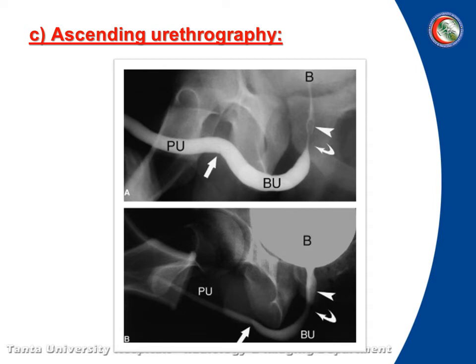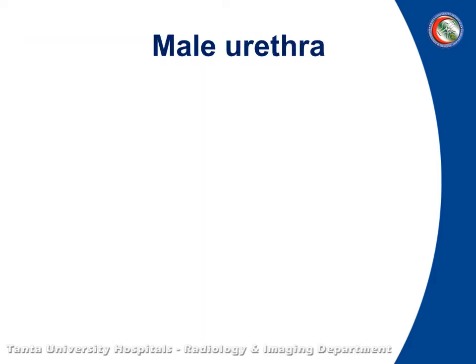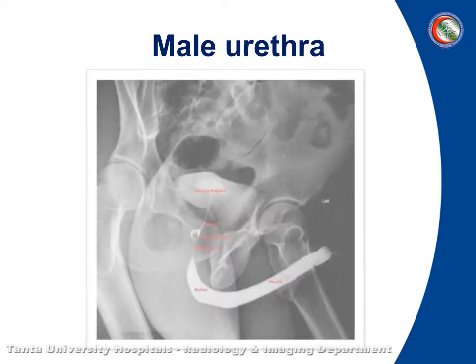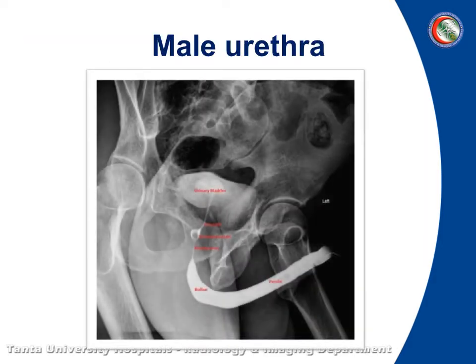On ascending urethrography, there is also complete opacification of the urethra with no stricture, no filling defect — male urethra. As you can see, the whole course and the whole parts with no filling defect or abnormal stricture.